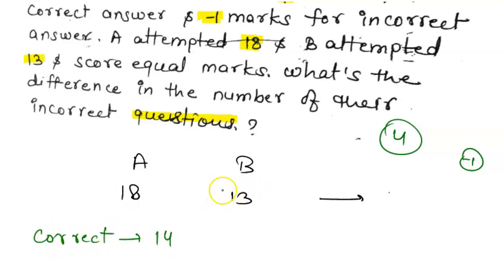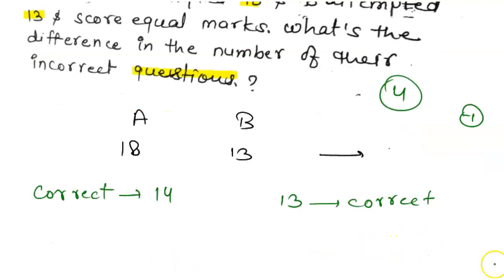And B has 13 attempts and 13 is correct. This can happen - B has 13 correct. So here we have to take one more question. So this is the difference of 4, means plus 4. This is a total 18 questions attempted, 14 correct.